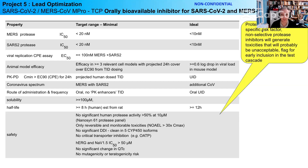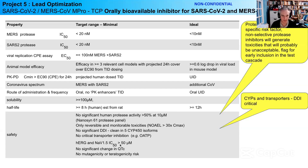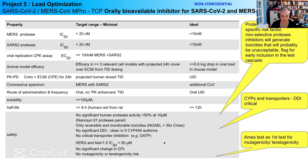For proteases, using a protease panel is a target-specific risk assessment — a non-selective protease inhibitor will generate lots of unacceptable toxicities, so we flag that as something we'll look at very early in the test cascade. On the TCP we have: no significant DDIs, clean across all five main CYPs, no critical transporter inhibition. Our first mutagenicity and teratogenicity assay uses an Ames test as our entry level. Clearly there will be many other reproductive toxicology studies going forward, but that's the first reasonable cellular system to use early on.